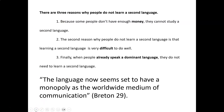Here's another example. This quote says: 'The language now seems set to have a monopoly as the worldwide medium of communication.' A monopoly means when one entity controls everything. This quote would connect most to point number three — when people already speak a dominant language — because it's about how one language, English in this case, dominates other languages.